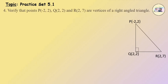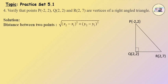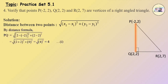Question Number 4: Verify that points P(minus 2, 2), Q(2, 2) and R(2, 7) are vertices of a right angle triangle. Solution: Distance between two points is equal to under root (x2 minus x1) the whole square plus (y2 minus y1) the whole square. By distance formula, PQ is equal to under root (2 minus of minus 2) the whole square plus (2 minus 2) the whole square, which is equal to under root (2 plus 2) the whole square plus 0 square, which is equal to under root 4 square, which is equal to 4.